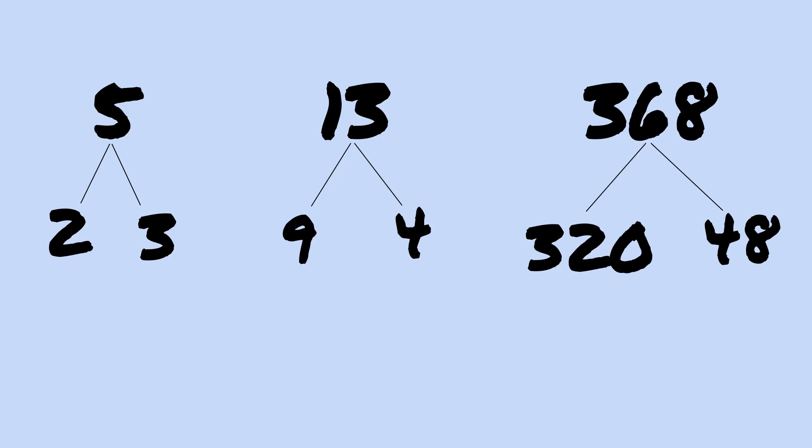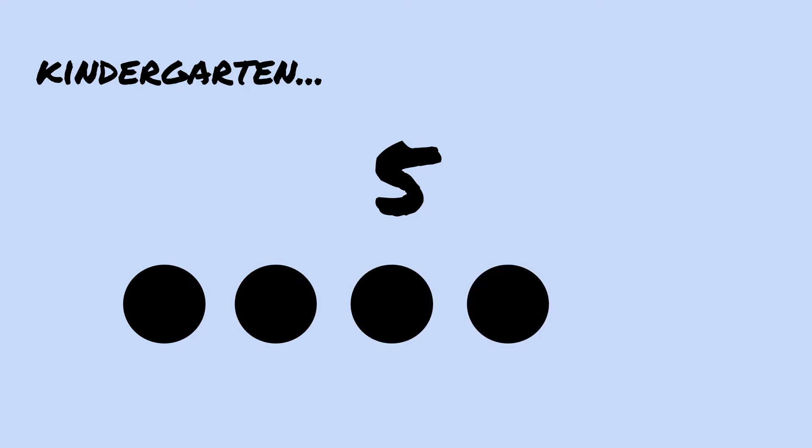In kindergarten, children learn about numbers like five. They learn the digit five means five things and can also be seen as three things and two things.